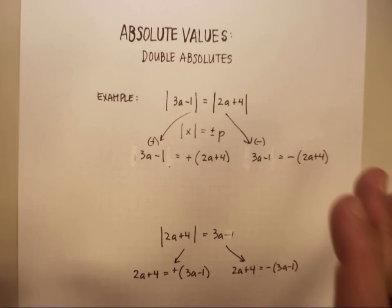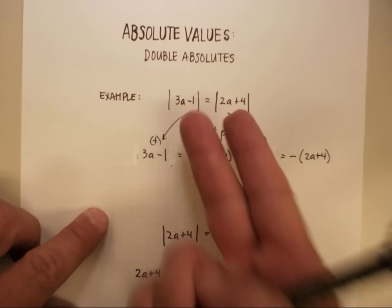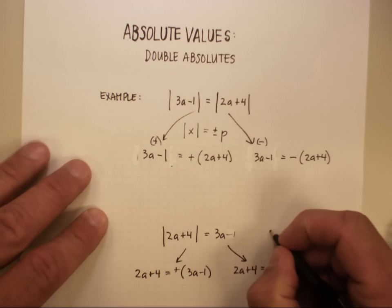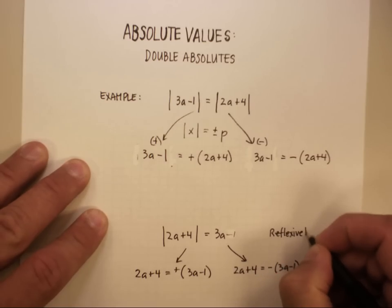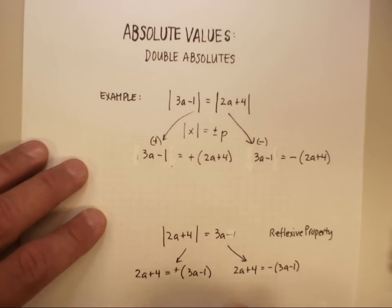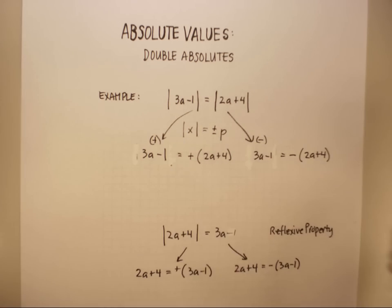Now I just showed you basically all four of these possibilities, right? Now why can I flip these around? That's something called the reflexive property of equality. So for example, if a is equal to b, that means that b is equal to a. It's the exact same thing.